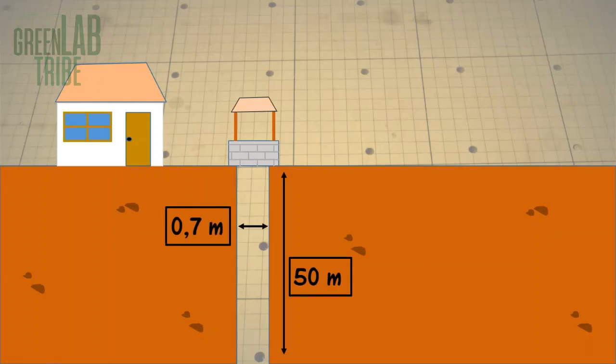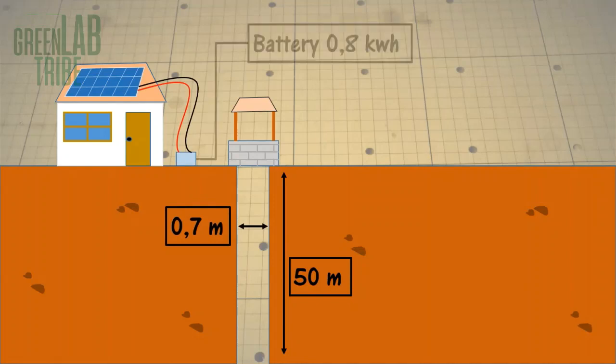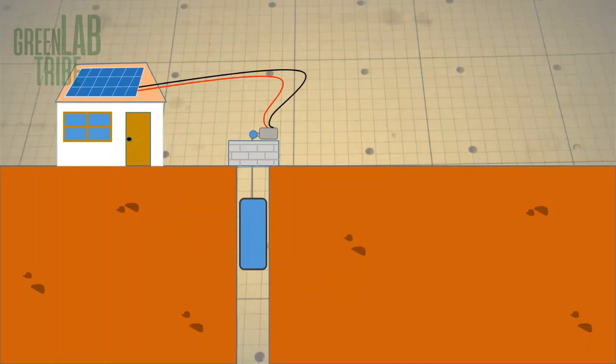If he would like to use it to build a Gravitricity system, he would need to use an 8 ton weight to replace a small off-grid solar system with a lead battery with 0.8 kWh of storage capacity, more or less like a battery the size of your car. And it would be useful to light some light bulbs.